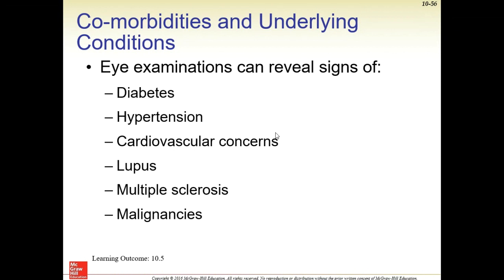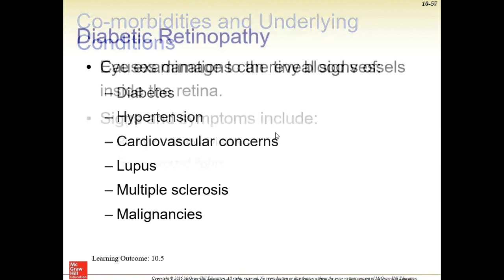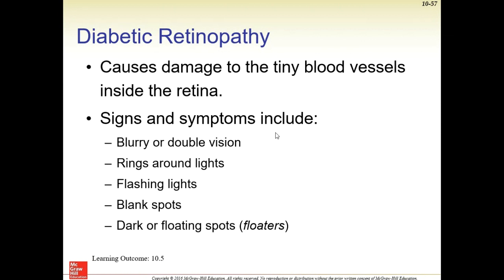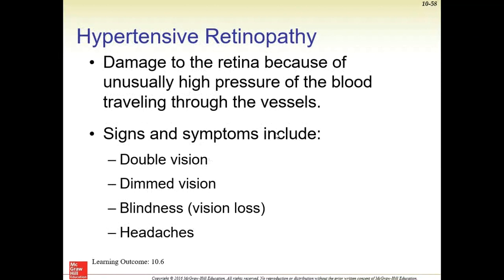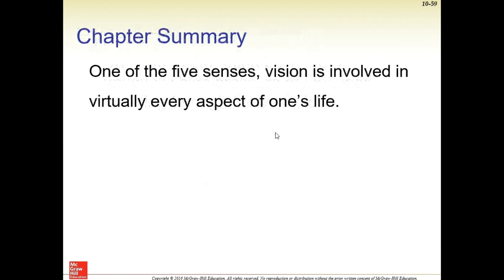Eye examinations can reveal signs of diabetes, hypertension, lupus, malignancies, and other cardiovascular concerns — usually a physician can look right into the eye and tell if everything's normal. Diabetic retinopathy causes damage to the blood vessels in the retina. Symptoms include blurry or double vision, flashing lights, blank spots, and dark or floating spots — floaters. Hypertensive retinopathy — when you have hypertension, the blood goes through your veins at such force that it causes damage to the kidneys or the retina. And that was our summary of the eyes.